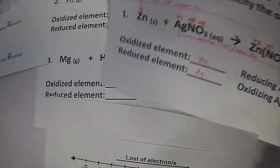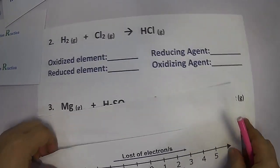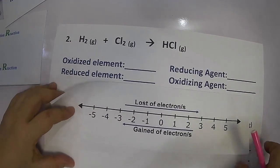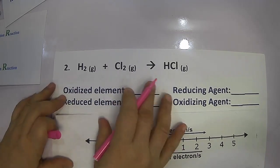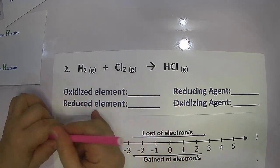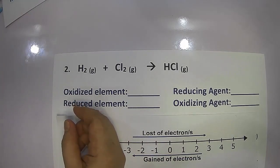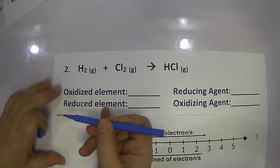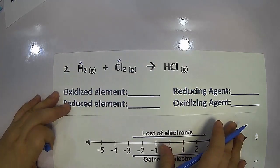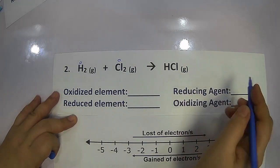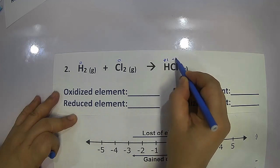Moving on to the next example: hydrogen gas plus chlorine gas gives hydrochloric acid. Hydrogen as a molecule in its combined state is zero. Likewise, chlorine is zero in its combined state. In the compound hydrochloric acid by the criss-cross method, hydrogen is positive one and chlorine is negative one.